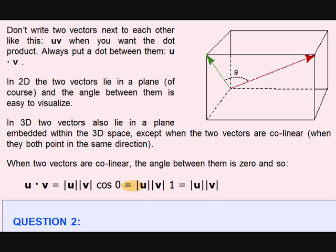So modulus of U into modulus of V into 1, because cos 0 is 1. So dot product of two vectors is always a real number because there is no angle. This fits only for collinear vectors.